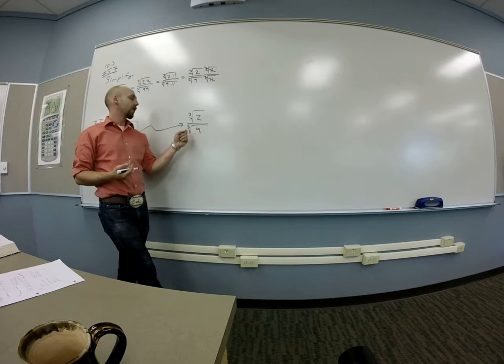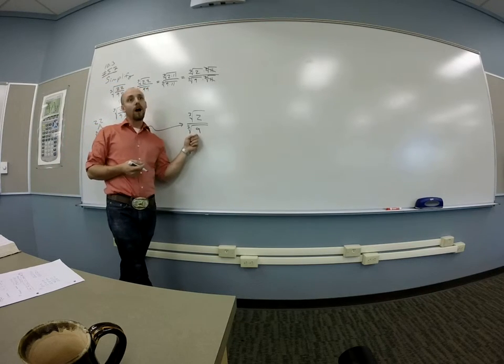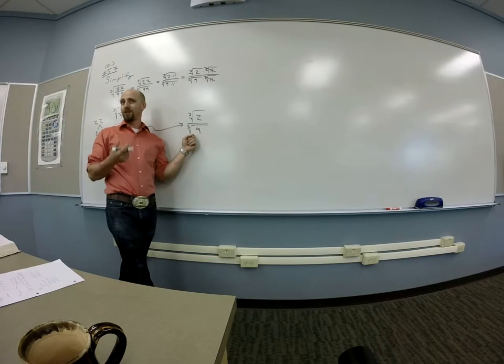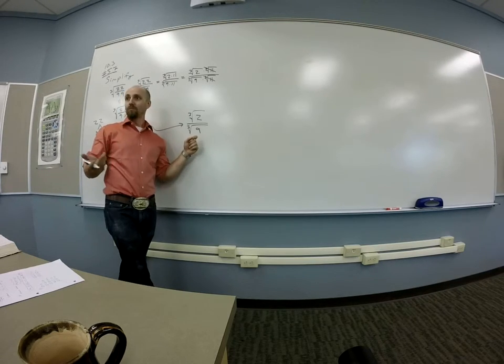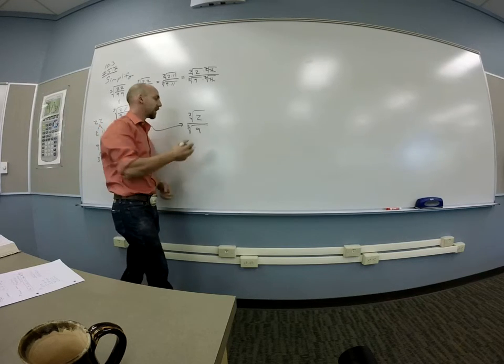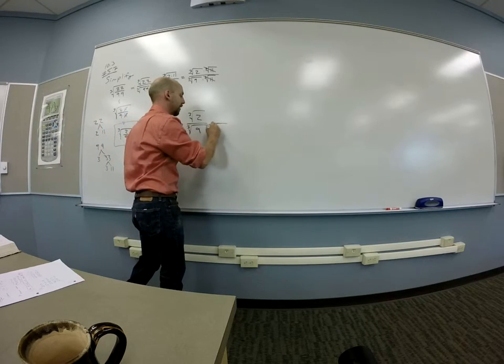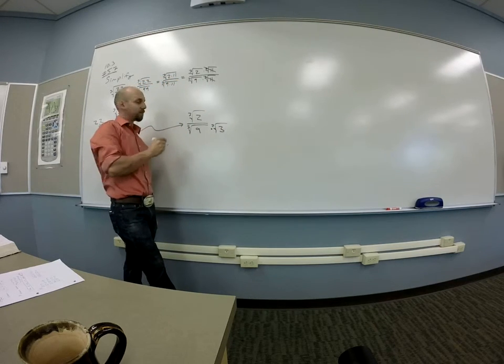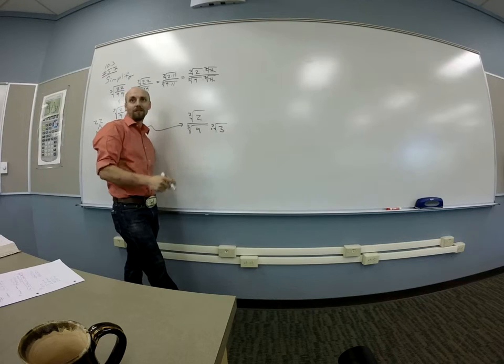So I might look at this and say, okay, I've got a cube root of 9. That's 3 times 3. To get something I know how to cube root, I need another 3, right? Which would give me 27 and then I could cube root it, right? So you might say, okay, well, if I multiply here by the cube root of 3, right, then this bottom piece will be the cube root of 27.